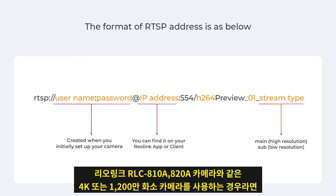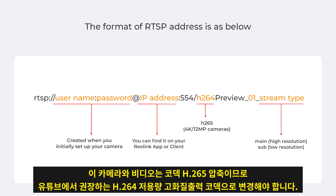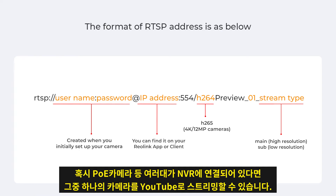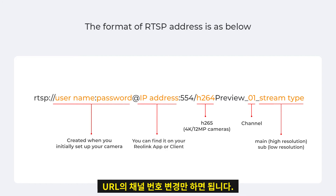If you're using a 4K or 12-megapixel camera, like the Reolink RLC-810A, you need to change H264 to H265, as these cameras encode videos with H265 compression. Some of you may have an NVR connecting to multiple cameras, so you can stream any one camera to YouTube — you just need to change the channel number in the URL.